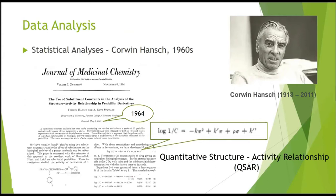Once there is a quantitative description of a set of structures and quantitative measurements of activities like IC50s, EC50s, and Kds, different types of quantitative analysis can be applied. Corwin Hansch did this for the first time in 1964, correlating the antimicrobial activity of penicillin derivatives with descriptors relating to hydrophobic and electronic properties of molecules. Models where molecular descriptors are the independent variables and activities are the dependent variable are known as quantitative structure-activity relationship models — QSAR models. Corwin Hansch is considered the father of drug design.